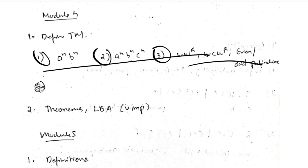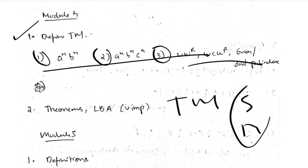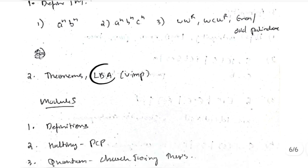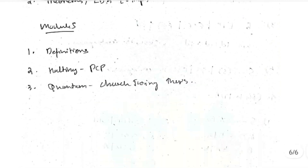For Turing Machines in Module 4, there are three most repeated questions — make sure you solve them. If you have time, solve the others as well since they can be asked. Note that Turing Machine for subtraction and multiplication is also heavily repeated, though it's slightly more complex. Try to solve those too. Additionally, Linear Bounded Automaton (LBA) is very important — make sure you study that and remember the key points. That covers Module 5 as well.